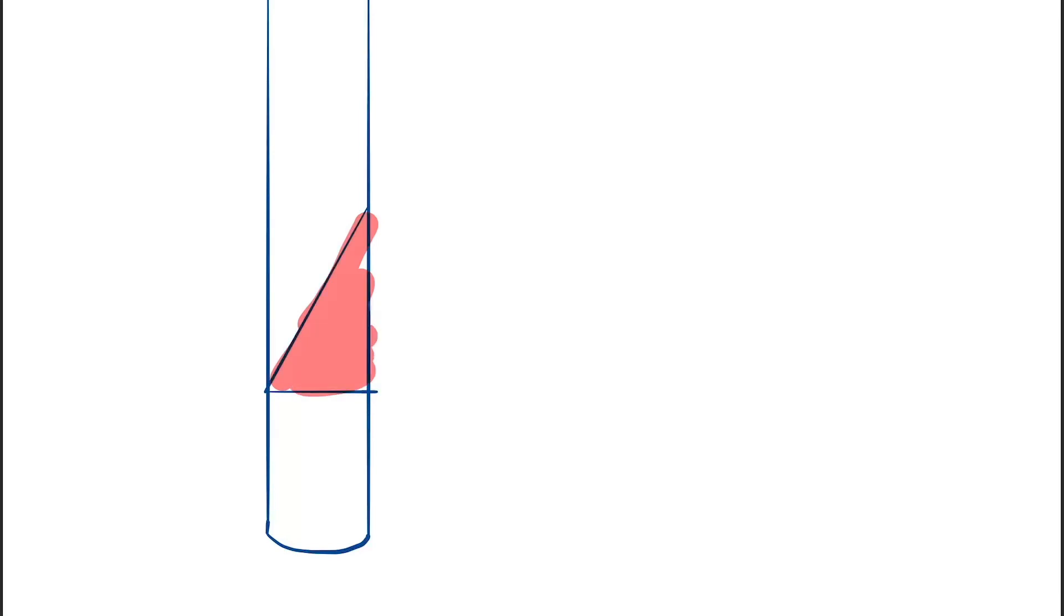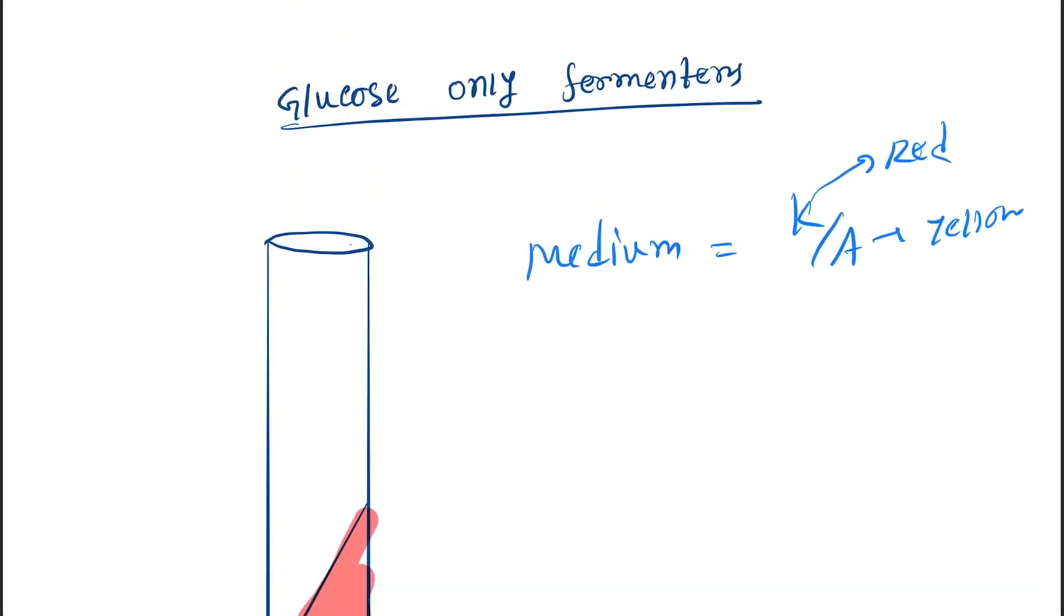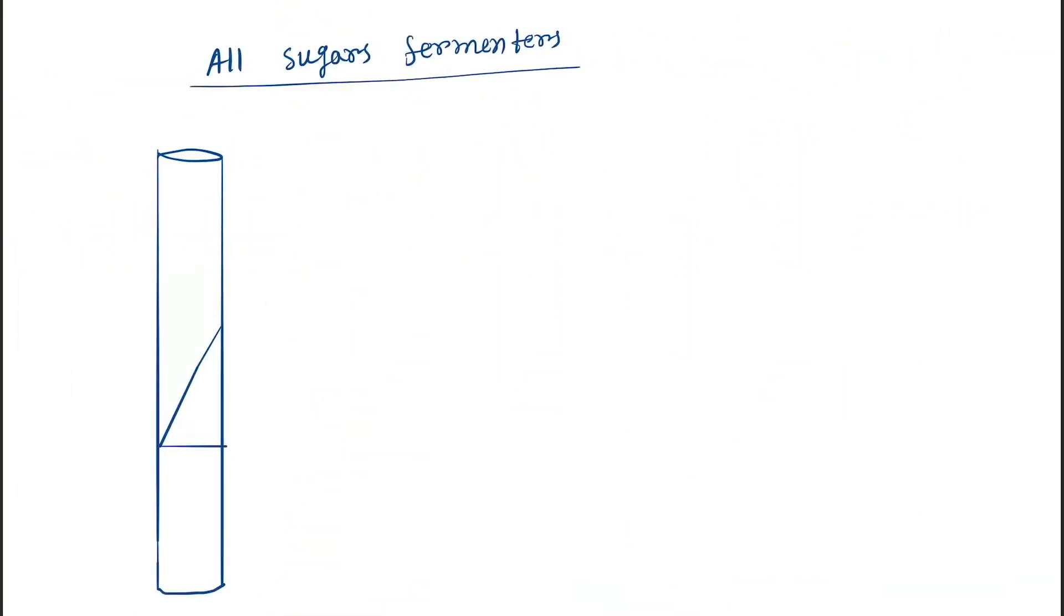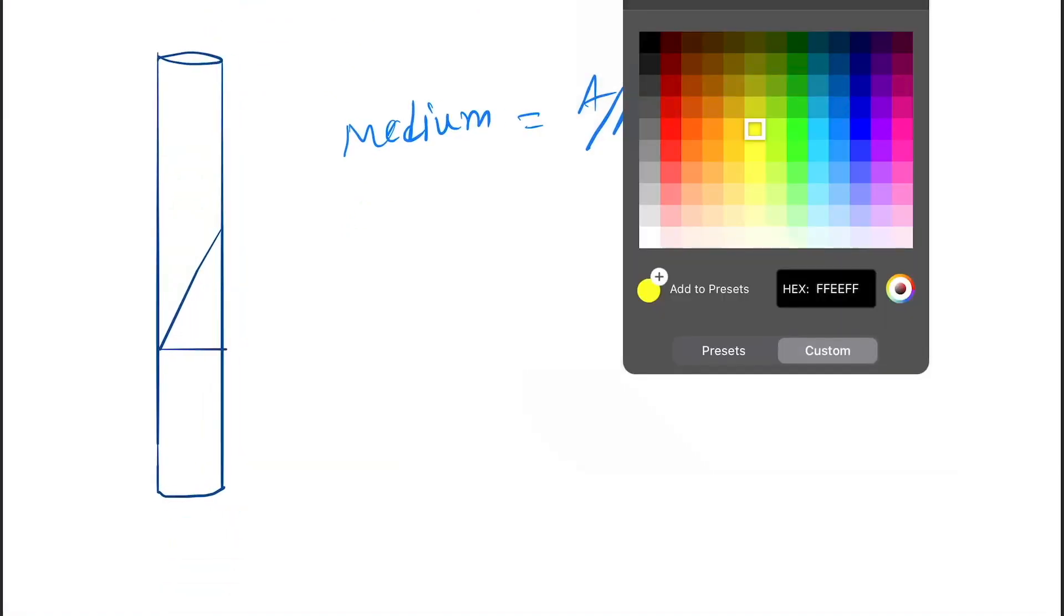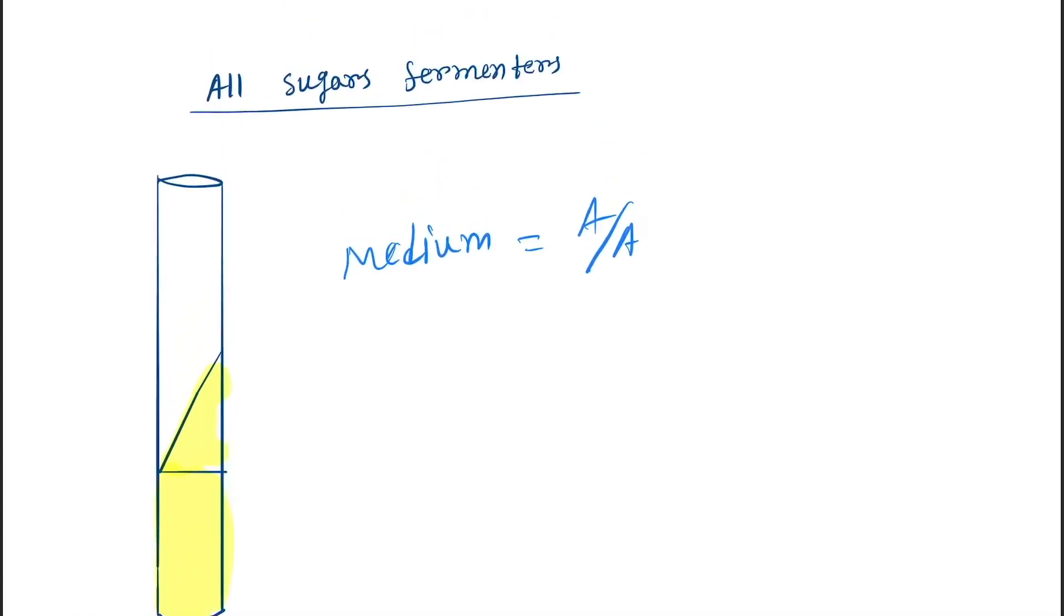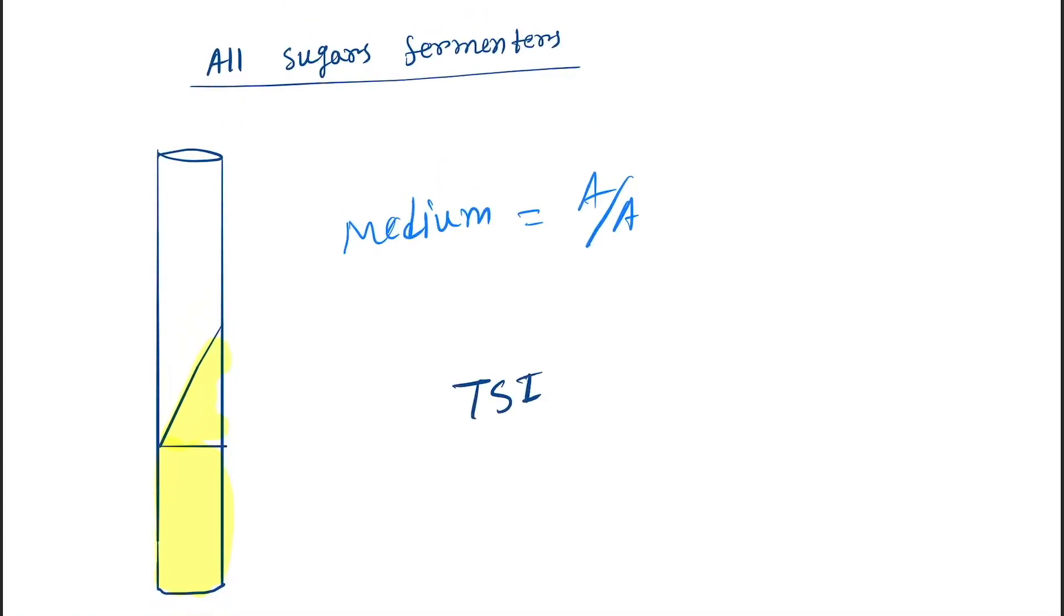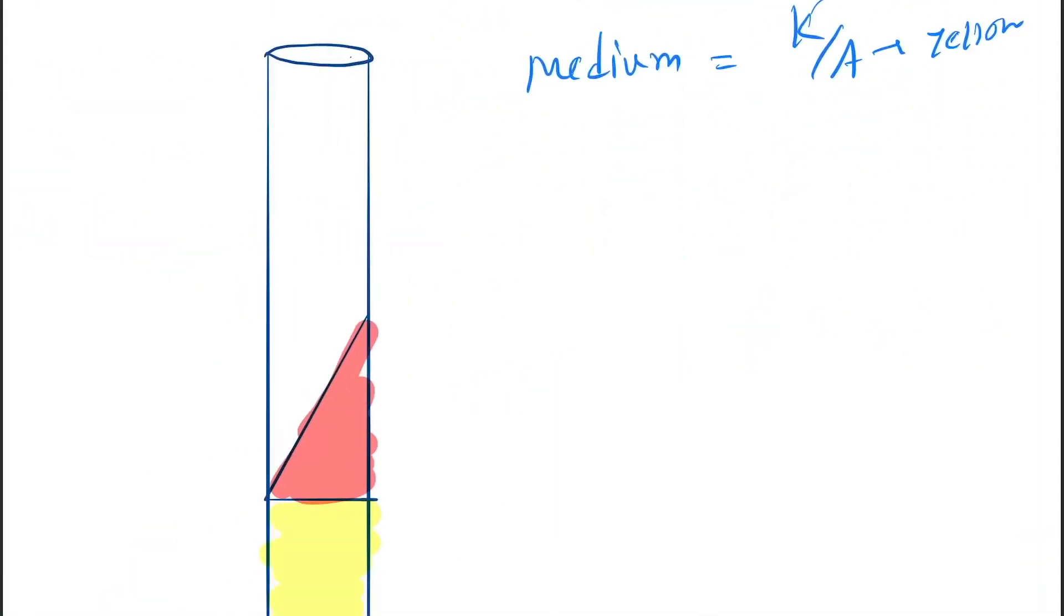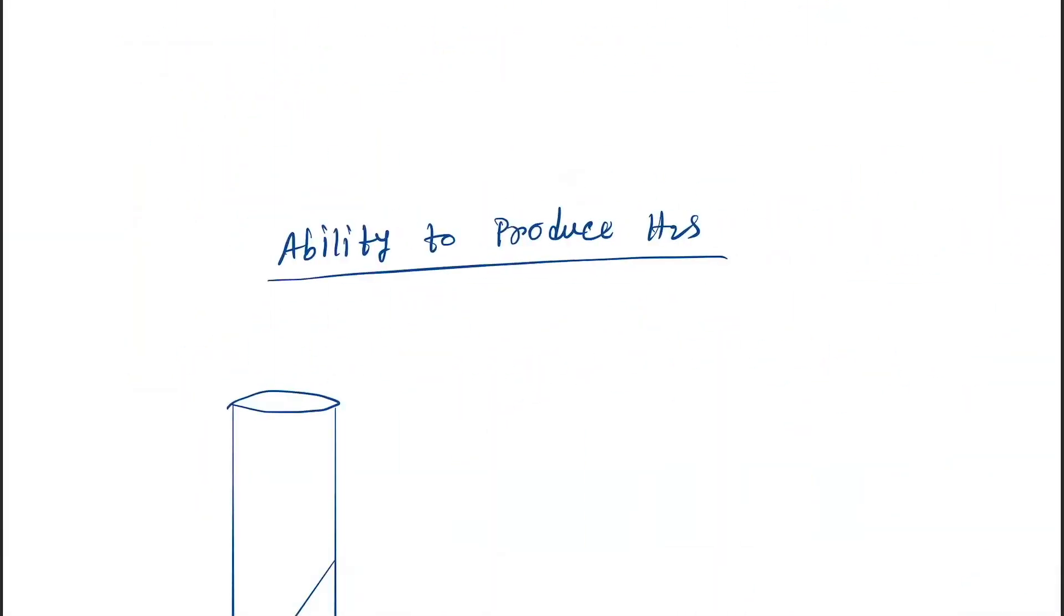Next is all sugar fermenters. Here the medium will be A by A, so color will be yellow by yellow. This is also called TSI positive. Now come to the H2S formation.